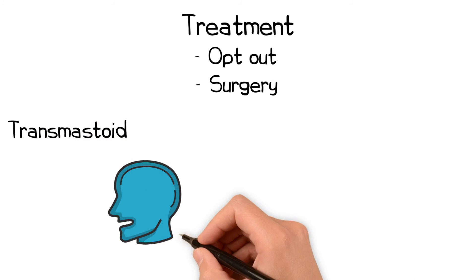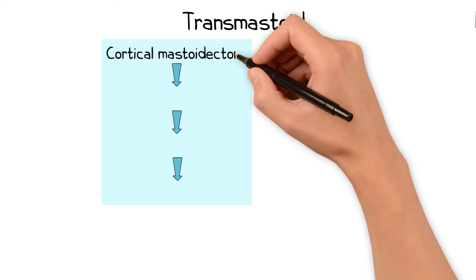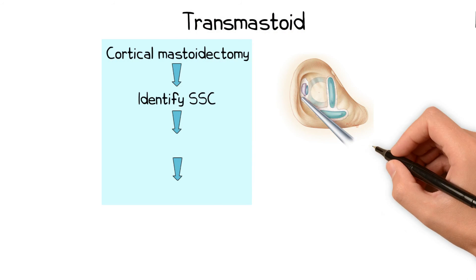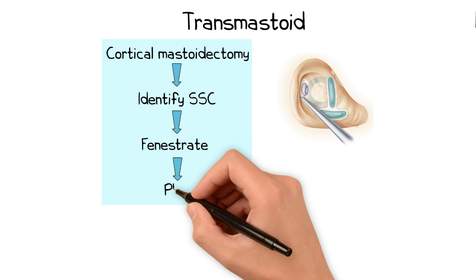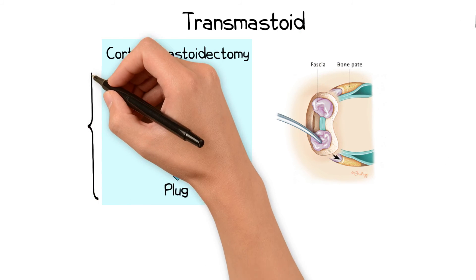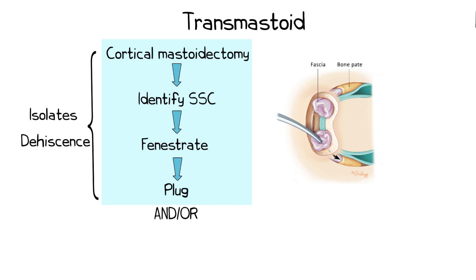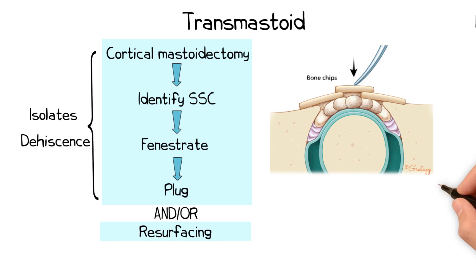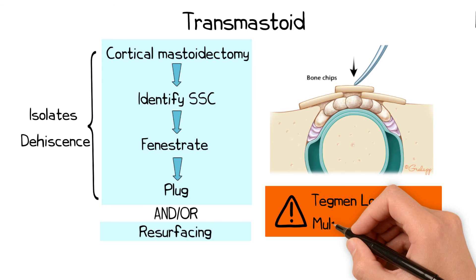The surgical approach can either be transmastoid or via a middle cranial fossa approach. A transmastoid repair involves a cortical mastoidectomy, identification of the superior semicircular canal, fenestrating the ascending and descending limb of the superior semicircular canal, and plugging the canal with muscle or fibrous tissue. This, in effect, isolates the area of the canal which has the dehiscence. In addition, or alternatively, resurfacing the dehiscent portion of the superior semicircular canal with a mixture of bone dust and tissue glue, such as Tisseel, can also be performed. Particular care should be taken when performing this operation via the transmastoid approach, as the tegmen is often low-lying and may have multiple areas of dehiscence.